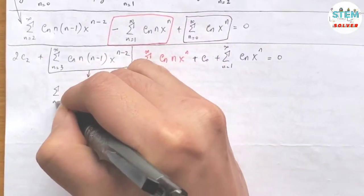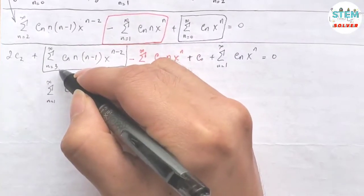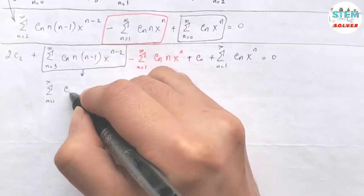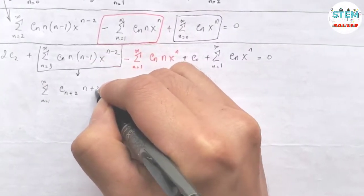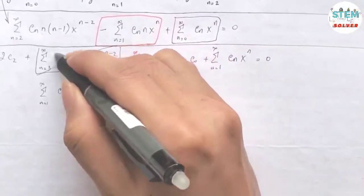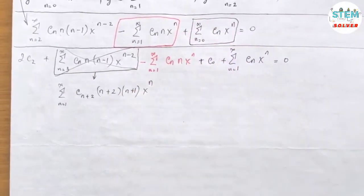So reindex this to 1, I have power series from 1 to infinity. So I subtract 2, then I have to add 2 for every single n inside. cn plus 2, n plus 2, n plus 1, x to the n. And then cross this side, that means that it's replaced by this.